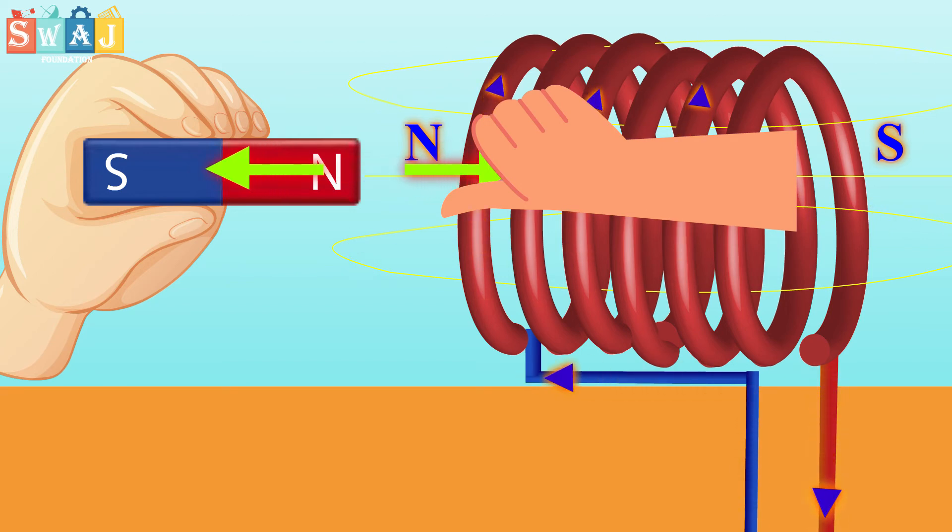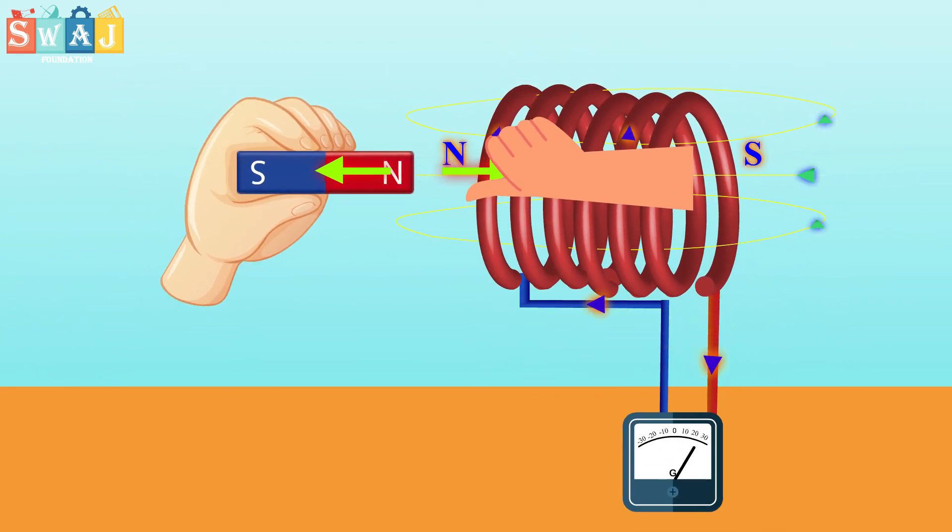According to Lenz law, the push of the magnet is the change that produces the induced current and the current acts to oppose the push.